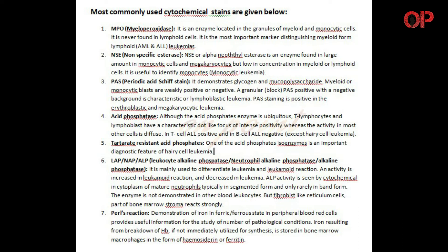6. LAP, or NAP, or ALP - leukocyte alkaline phosphatase, or neutrophil alkaline phosphatase, or alkaline phosphatase. It is mainly used to differentiate leukemia and leukemoid reaction. Activity is increased in leukemoid reaction and decreased in leukemia. ALP activity is seen in the cytoplasm of mature neutrophils, typically in segmented form and only rarely in band form. The enzyme is not demonstrated in other blood leukocytes, but fibroblast-like reticulum cells, part of bone marrow stroma, react strongly.